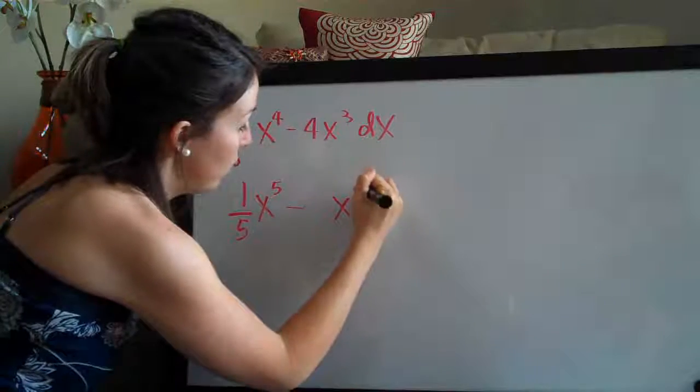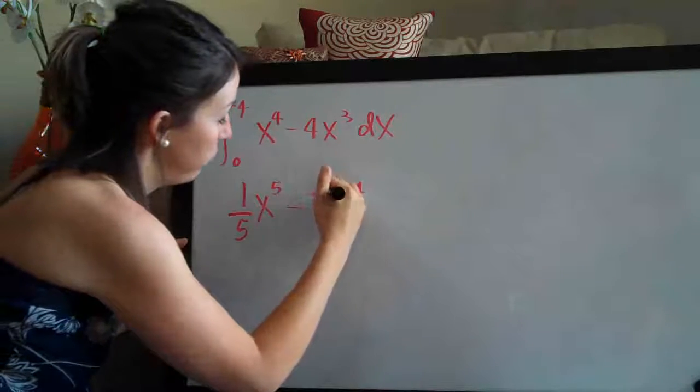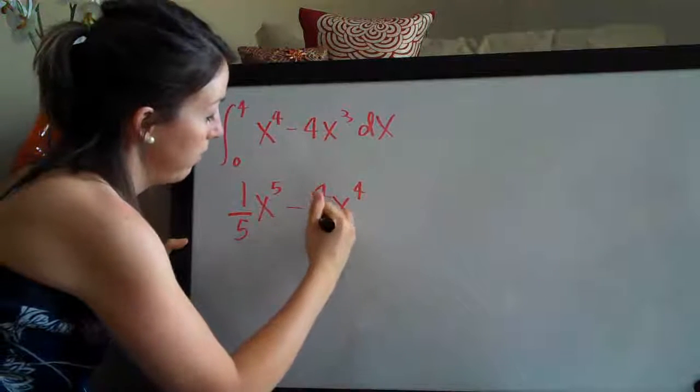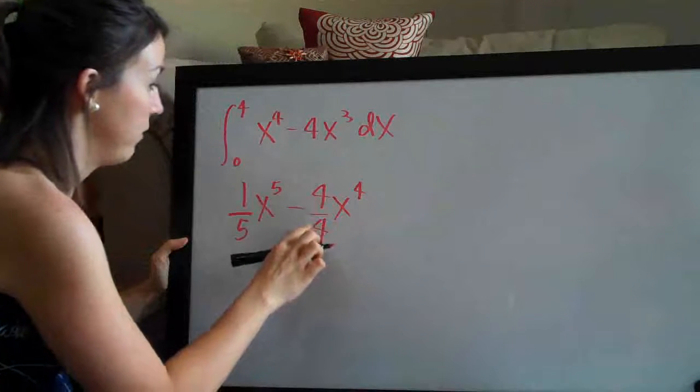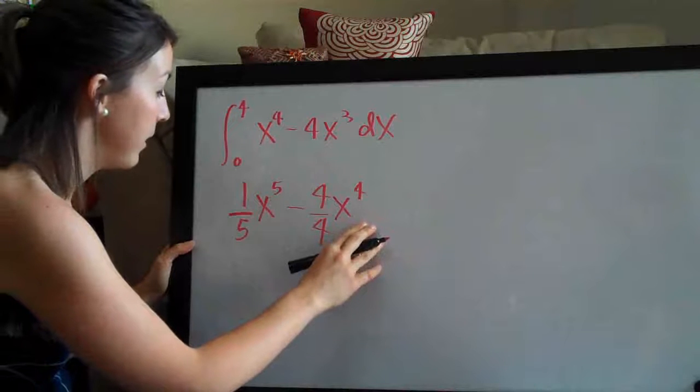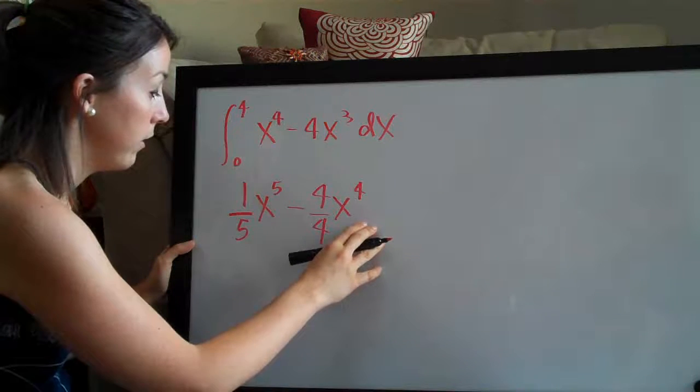Three plus one is four and then we divide the coefficient, four, by the new exponent, also four. So that's going to cancel and be one. So here is our integral.